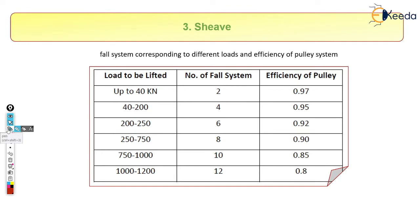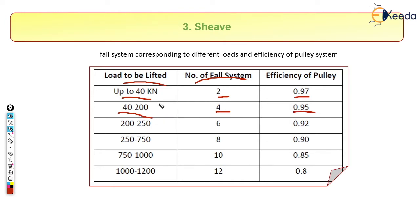Since we are dealing with pulleys, we need to know about efficiencies. Efficiency depends on the number of falls in the multi-pulley system and the load to be lifted. For loads up to 40 kN we use a 3-fall system with a pulley efficiency of 0.97. For loads from 40 to 200 kN we use a 4-fall system with an efficiency of 0.95, which means 95%.